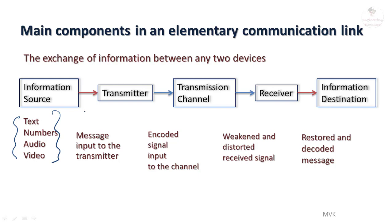There are several blocks involved between the source and destination. After the source and before the destination, we may use a transducer to convert one form of energy into another — physical quantity into electrical at the transmitter side, and electrical quantity into physical signal at the receiver side. At the transmitter side we have a driver circuit; the electric current from the driver circuit is connected to a laser source. The channel is the optical fiber cable, and at the receiver side the first device used is a photodiode, whose electrical signal is processed further and converted into original form.